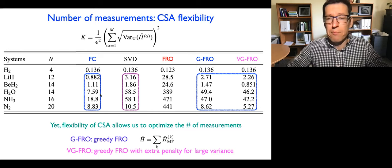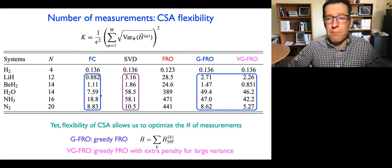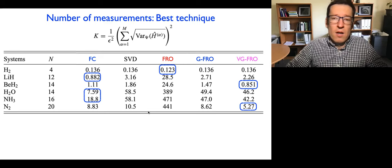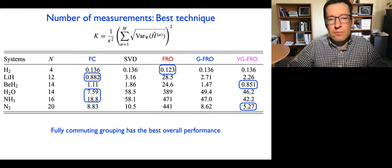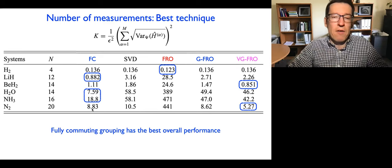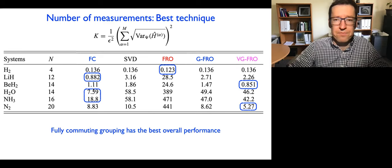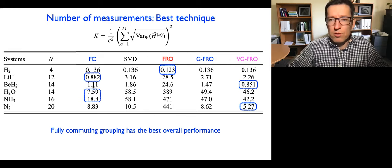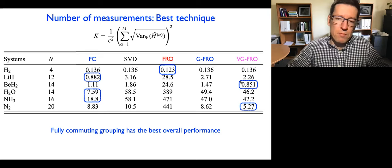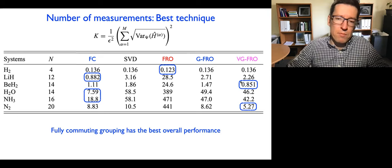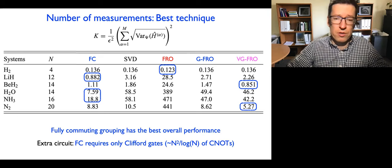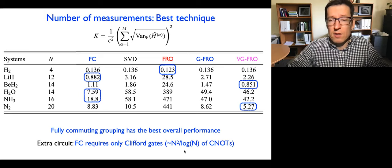Looking at which technique is probably best overall, the conclusion splits across various cases. Overall, fully commuting grouping using the greedy technique for partitioning the graph into fully connected parts has the best results in three out of six cases, and even when not the best it's pretty close. Fully commuting seems to perform quite well overall. It also requires extra circuitry involving only Clifford gates, and we estimate the number of CNOT gates needed for this extra circuitry.